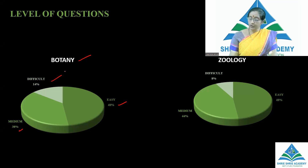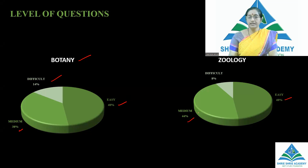For zoology: easy level 48%, medium level 44%, and difficult level only 8%.